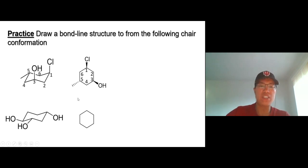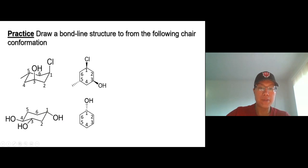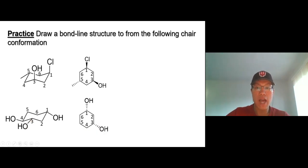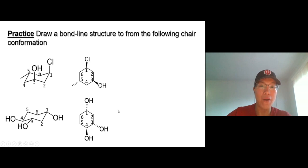The methyl group on carbon five is down equatorial, so draw it down with a wedge line. For the second example, number the carbons first: one, two, three, four, five, six. Carbon one is pointing down — keep it down. Carbon three is also pointing down — that's equatorial, so use a dash line. Carbon four is pointing up — draw it pointing up. That's it — super simple.